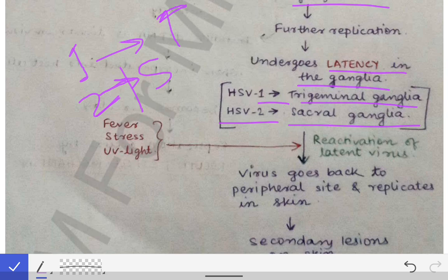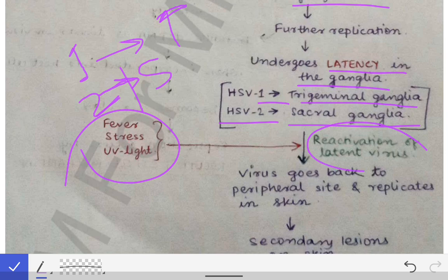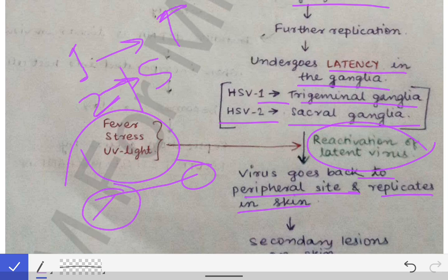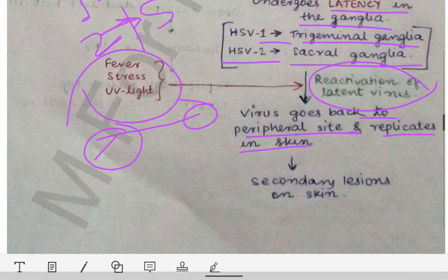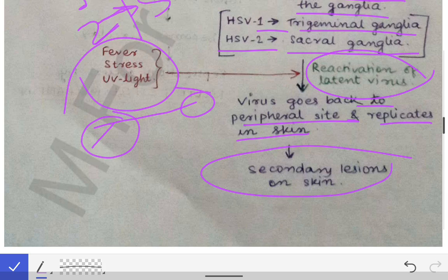After establishing latency in the ganglia, the virus must reactivate before causing further infection. Reactivation is triggered by fever, stress, or UV light exposure. Once reactivated, the latent viruses travel back to peripheral sites and replicate in the skin. They travel along the nerves from those ganglia, causing secondary lesions at the skin areas supplied by those nerves.